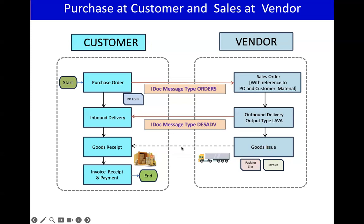Once the packing slip and invoice copy are printed at the vendor level and the truck has reached our company, we do the goods receipt. If you are using warehouse management, you do the put-away, print a storage unit or transfer order, keep it in the bin, and confirm. Then goods receipt is done. If you are not using warehouse management, once goods are received you verify the quantity in the packing slip against what is physically received, and once both match you perform the goods receipt.